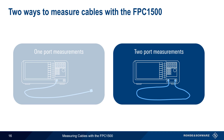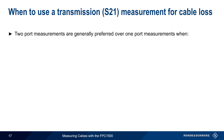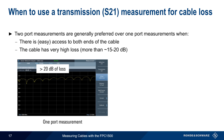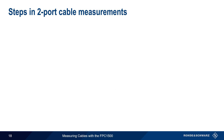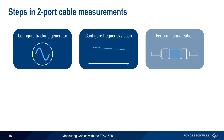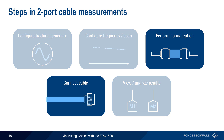Now that we've covered one-port cable measurements, let's look at how to make two-port cable measurements. Two-port measurements are generally preferred over one-port measurements in two cases: the first is when there's easy access to both ends of the cable, and the second is when the cable has very high loss, more than about 15 or 20 dB. High levels of loss tend to produce less accurate one-port measurements. For example, with more than 20 dB of loss, the one-port measurement results should be viewed with caution, and making a two-port measurement of the same cable provides a much more accurate and repeatable test result. The steps in making two-port or transmission cable measurements are: configuring the tracking generator, configuring the frequency and span, performing a normalization, connecting the cable, and viewing or analyzing the results. Most of these steps are the same as for one-port measurements, so we'll concentrate on the differences.